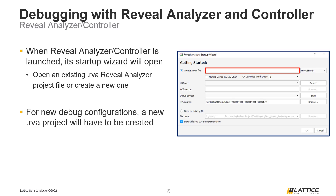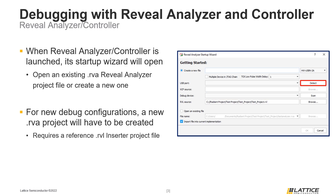Users should detect the device they are programming using the USB port, XCF source, and debug device fields. The Detect button can be used to detect a USB port, and the Scan button can be used to scan for a device. The device must already be programmed with the updated bitstream and connected to the same computer. Users will also need to specify the Reveal Inserter file used to add debug cores to their project, then click OK to finish generating the Reveal Analyzer project session.